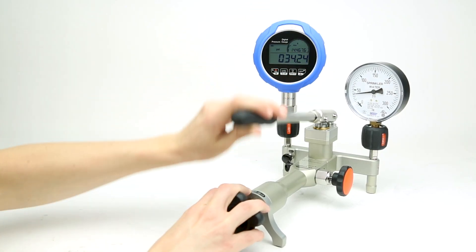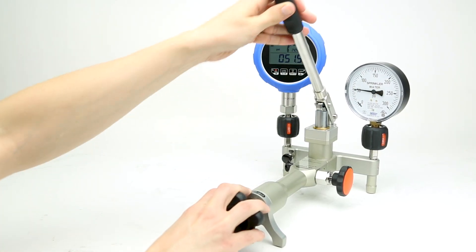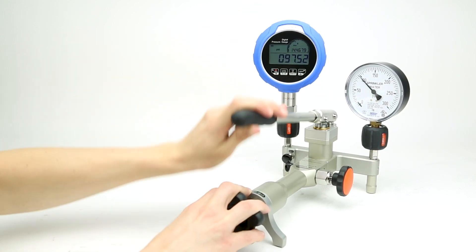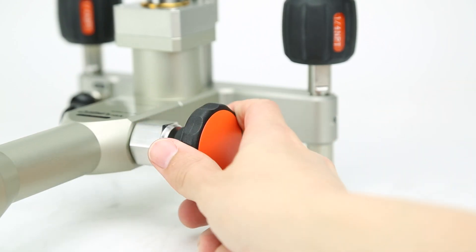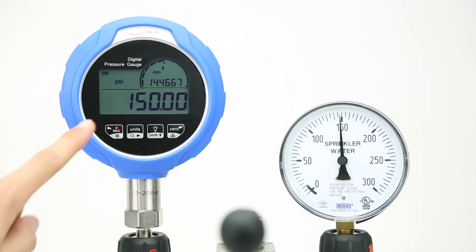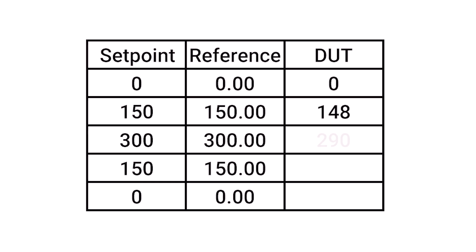After making note of the zero point on each gauge, operate the pump until the reference gauge reads your second set point, in this case 150 psi. To get an exact reading, you may need to close the isolation valve of the pump and use the fine adjust knob instead of the lever arm. Once you record the readings from both gauges, continue through the set points, going up to 300 psi and then back down to 150 and finally to zero to finish the test.